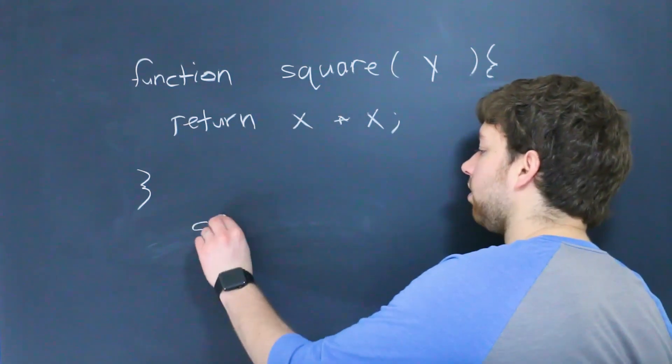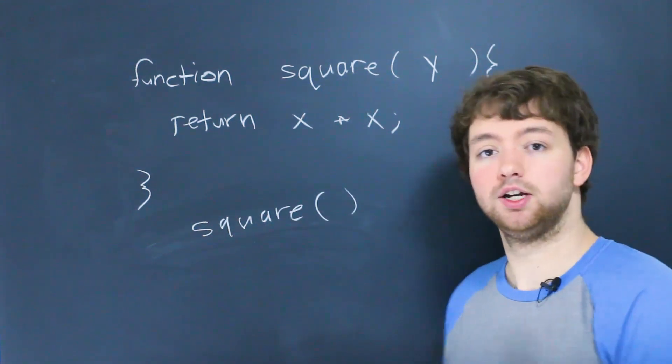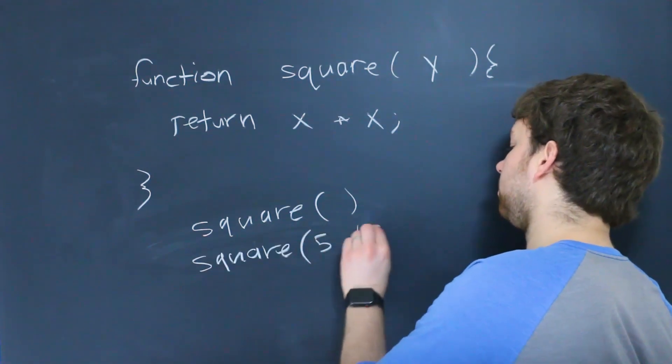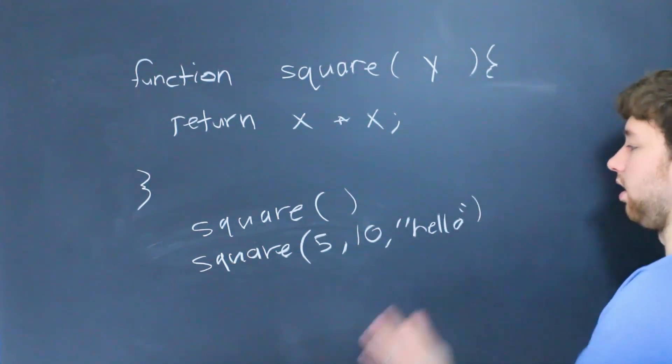So for example, we could call square and just leave the parentheses empty. Or we could call square and pass in multiple numbers. Or we can even pass in a string. So how does this work?